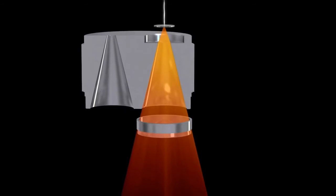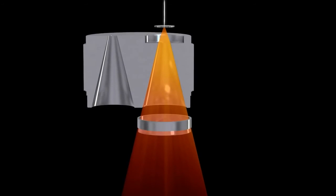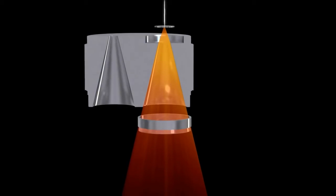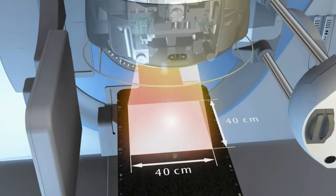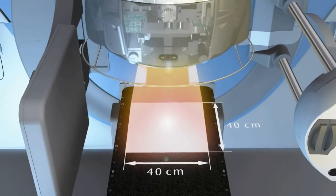The primary collimator minimizes leakage, and therefore excess total body dose, by absorbing scattered X-rays traveling in the lateral direction. It also defines the maximum size of the resulting clinical radiation beam.